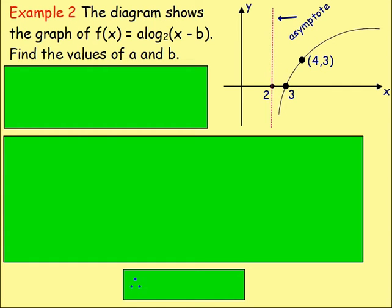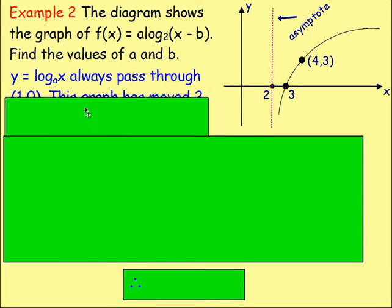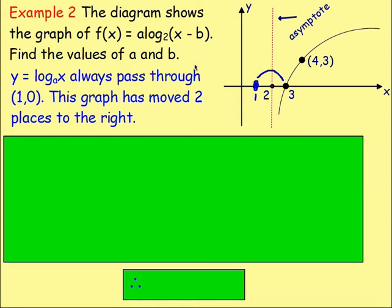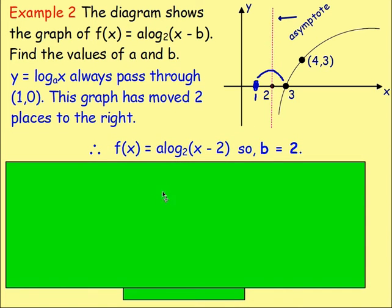Example 2: The diagram shows the graph of f(x) equals a log base 2 of x minus b. Find the values of a and b. If you have log base 2 of something, you know that's going to pass through (1, 0). But once again, the graph is not passing through (1, 0) — it is shifted to the right. It's moved 2 places, going from 1 to 3. Therefore, the value of b has to be 2. If you have x minus 2, the minus moves in the positive direction, which means it moved 2 units. Therefore the value of b is 2.